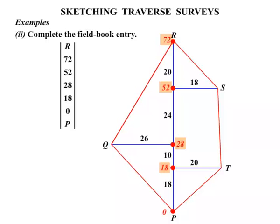The point at the top there is R. At the 18 metre mark, to the right is a point T, 20 metres away. So in our field book entry at the 18 metre mark, we write 20 and T. Make sure it's on the right hand side.